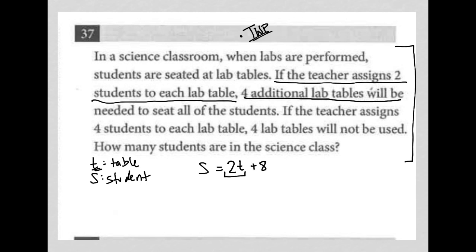That number eight comes from the fact that there are four tables and at each table there are two students. Right. So that eight represents the number of students at those four tables. Whereas this two times T represents the number of students at the unknown value of T tables that the class starts off with. So just want to make sure that's clear. S equals two T plus eight.